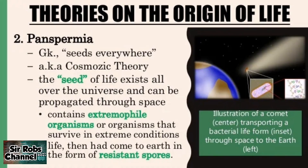The second theory is panspermia, from the Greek word meaning 'seeds everywhere,' also known as the Kosmosic theory. It holds that seeds of life exist all over the universe and can be propagated through space. It involves extremophile organisms that survive extreme conditions. Life came to Earth via meteorites, asteroids, or comets, so the origin of life is not related to the Earth's environment.